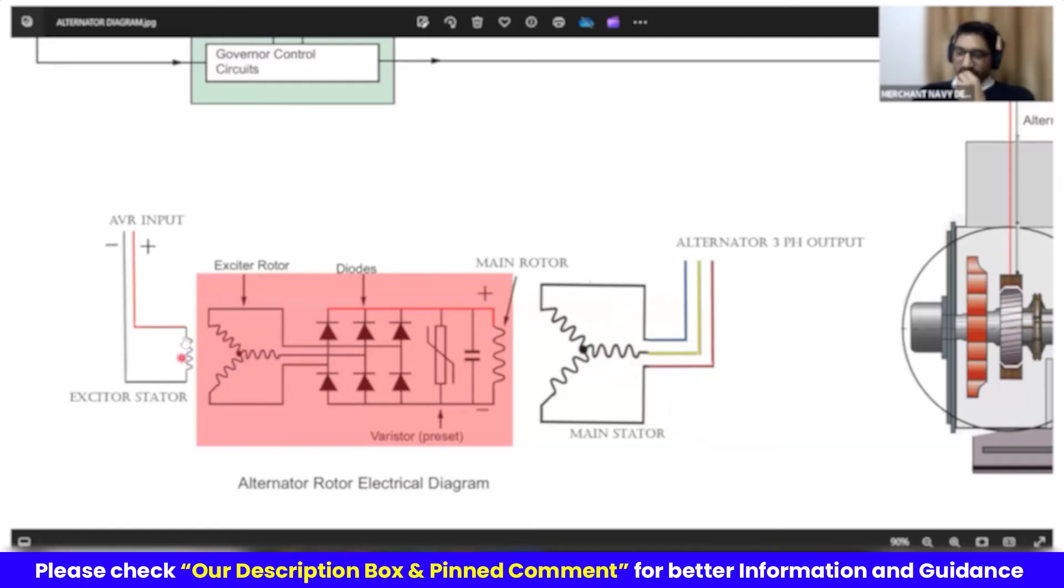This magnet, electromagnet will produce AC here, three phase AC. This three phase AC needs to be rectified by three phase rectifier. This is nothing but three phase rectifier. This is also rotating. This is also called RRA, rotating rectifier assembly. And it is now rectified to a DC current, plus and minus.